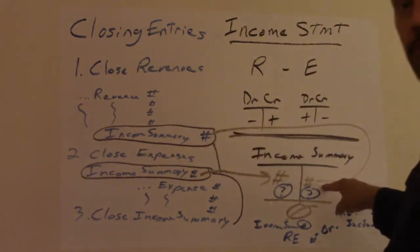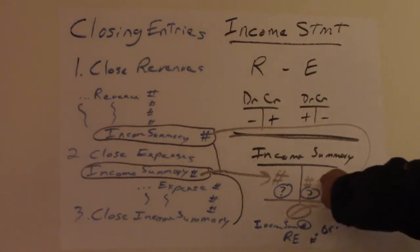And I just showed you put that as an income summary T account. And you put the number right here on the credit side.